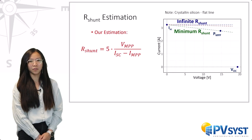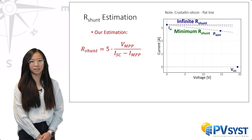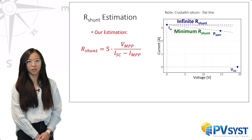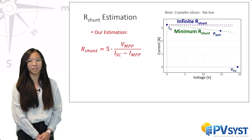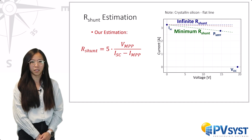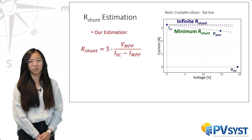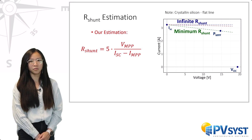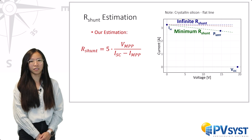For the R shunt value, PVSYS takes the hypothesis that the current in the resistance, represented by the slope around ISC, is 0.2 times the current difference IPH minus IMPP. This hypothesis works well for most PV modules. For modern crystalline silicon modules, the shunt resistance is so high that this has a very low impact on the results of the model.